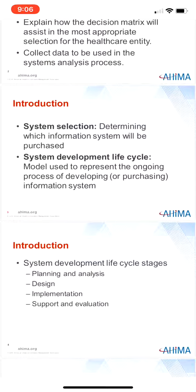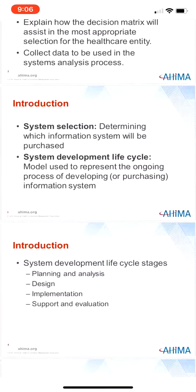System selection begins with the idea that you need a new information system — it could be a master patient index. The process continues until the contract has been signed, and the complexity of the system selection process varies widely, from selecting a standard off-the-shelf software product like a word processor to the very complex implementation of an electronic health record system. The length of time and number of people involved also vary.